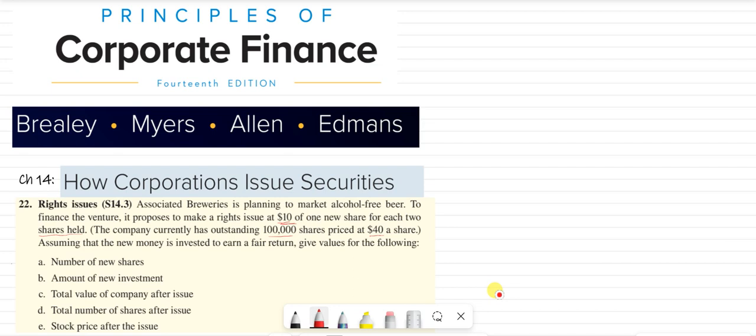Assuming that the new money is invested to earn a fair return, give value for the following. So the requirement number one is number of new shares. To calculate number of new shares, we will use the existing shares which are 100,000, and one new share will be issued to those who have two shares. So every two shares will be given one share. So the new number of shares will be 50,000.